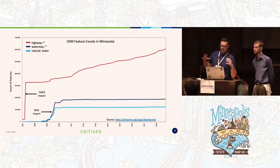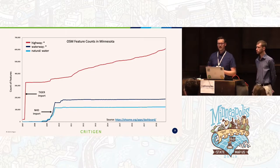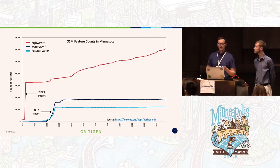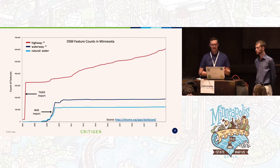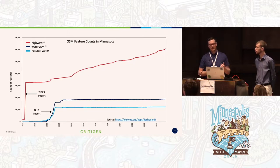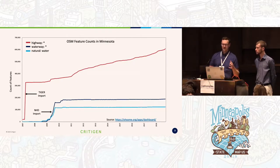This chart essentially shows OSM feature counts in Minnesota over time. We're showing highway tags versus waterway tags versus natural equals water tags to show the change in feature creation rate over time. There's a distinct difference between the relative rates of feature creation for road features versus water features, and bulk imports — the Tiger import between 2007–2008 and the NHD import between 2009–2011 — are clearly important to map completeness.